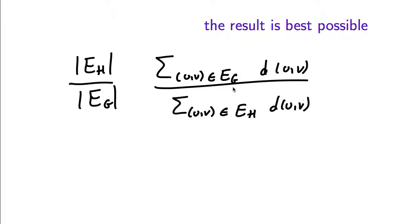Remember G is a constant degree graph which has constant expansion and H is a clique. And d is the shortest path distance in G. H has order of n squared edges, G has order of n edges if the degree is a constant. So this is order of n.